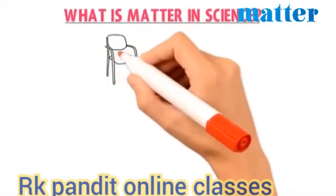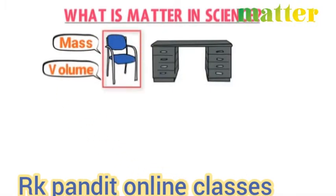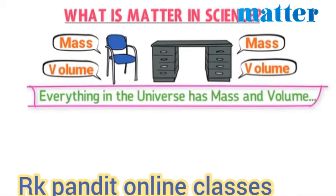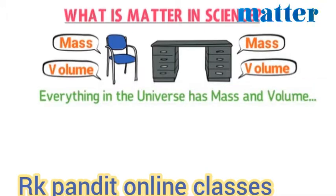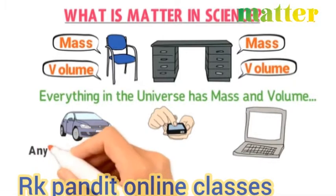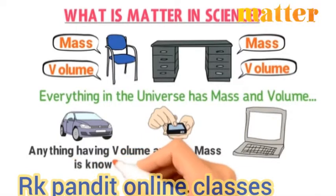What is matter in science? Let's consider a chair and a desk. This chair has some mass and volume — it occupies some space. Similarly, this desk has some mass and occupies some space, so it has volume and mass. According to this example, we can say that everything in the universe has some mass and volume. Thus in science, we define matter as anything occupying some space — having some volume — and having some mass.